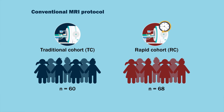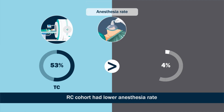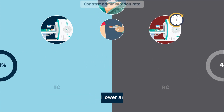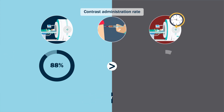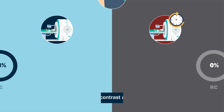The study revealed anesthesia rates of 53% for the TC and 4% for the RC, and contrast administration rates of 88% and 0% for the TC and RC, respectively.